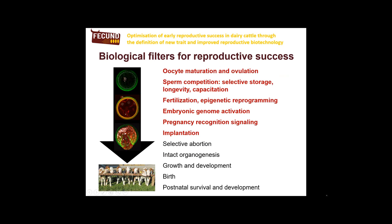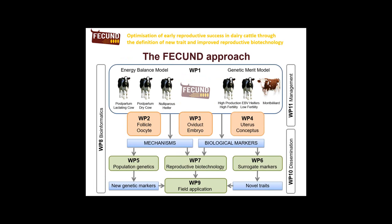Reflecting on the first presentation, there are many biological filters that limit reproductive success. As outlined in Pat Lonergan's presentation, processes like oocyte maturation and ovulation, fertilization, embryonic genome activation, pregnancy recognition signaling, and implantation are very important because many failures of reproduction occur in this very first period. In this experimental setup, we had a metabolic model and a genetic merit model, and importantly in work packages 2, 3, and 4, we always looked at the oocyte, embryo, and conceptus plus the respective maternal environment in order to examine interactions between these compartments.